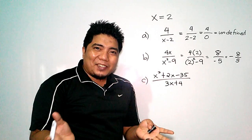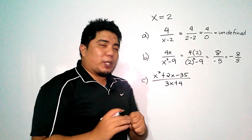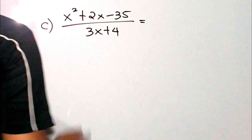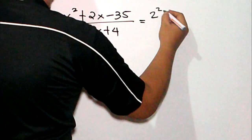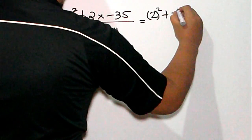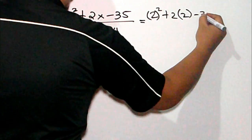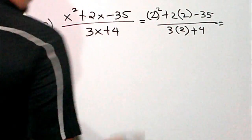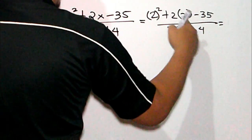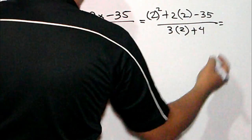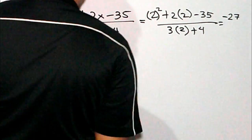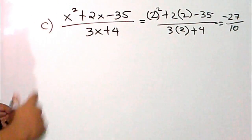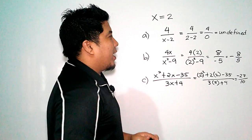Now let us go to our next expression: x² + 2x − 35 divided by 3x + 4. We change x to 2, giving us 2² + 2(2) − 35 in the numerator, and 3(2) + 4 in the denominator. Simplifying: 4 + 4 = 8, and 8 − 35 = negative 27. In the denominator, 6 + 4 = 10. So our final answer is negative 27 over 10.